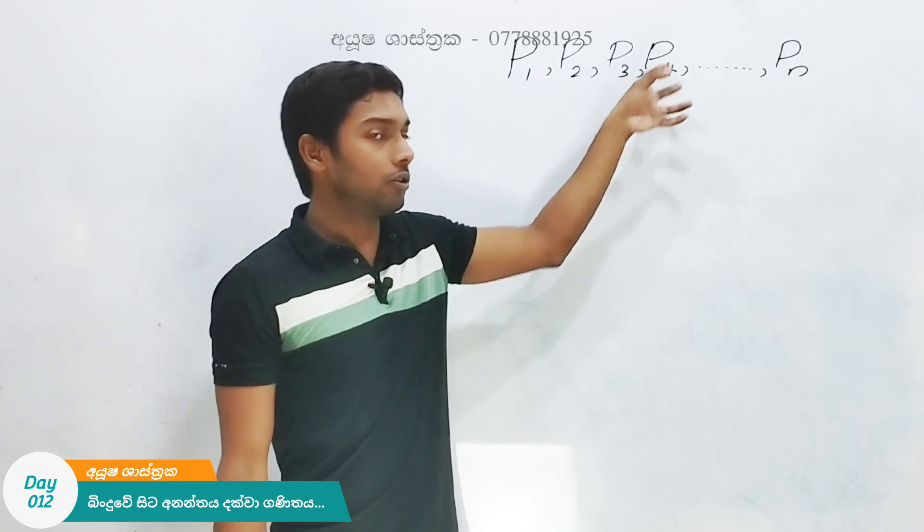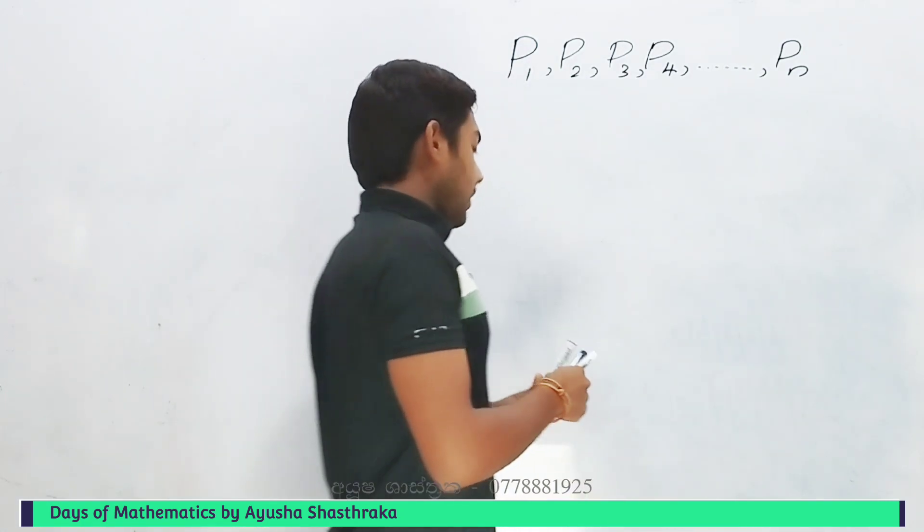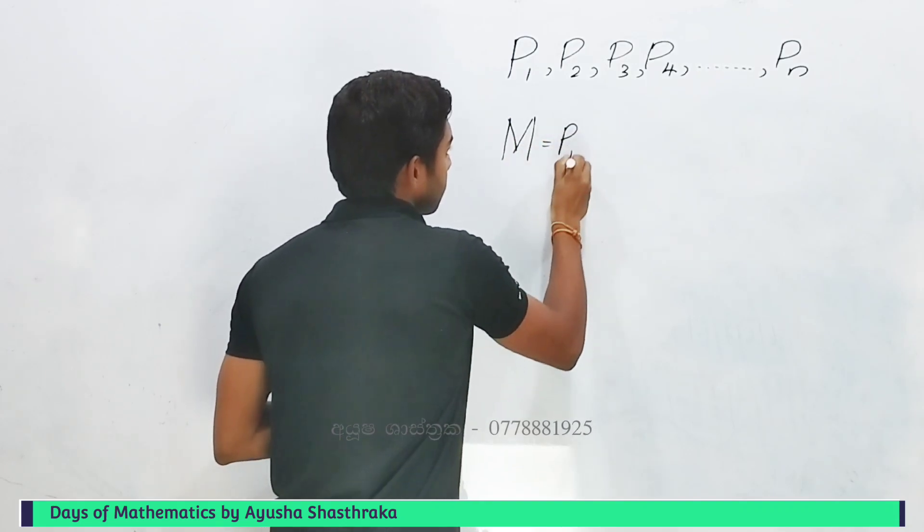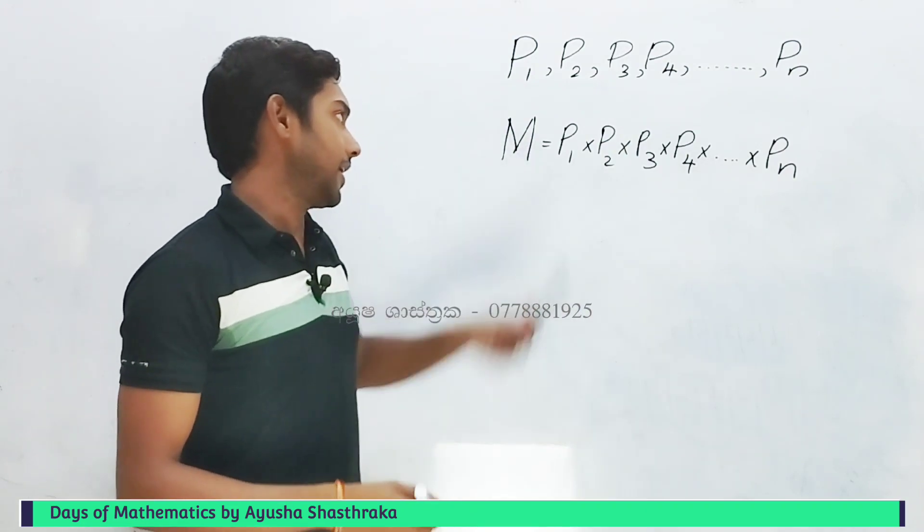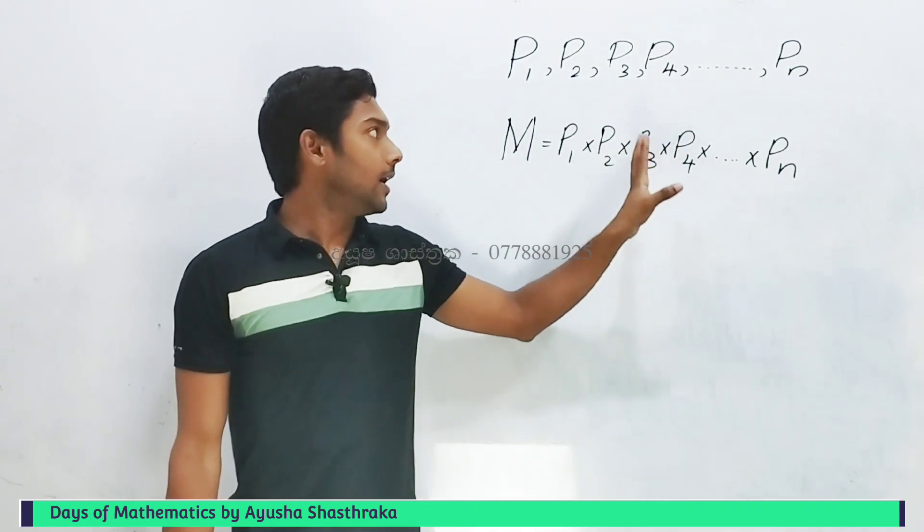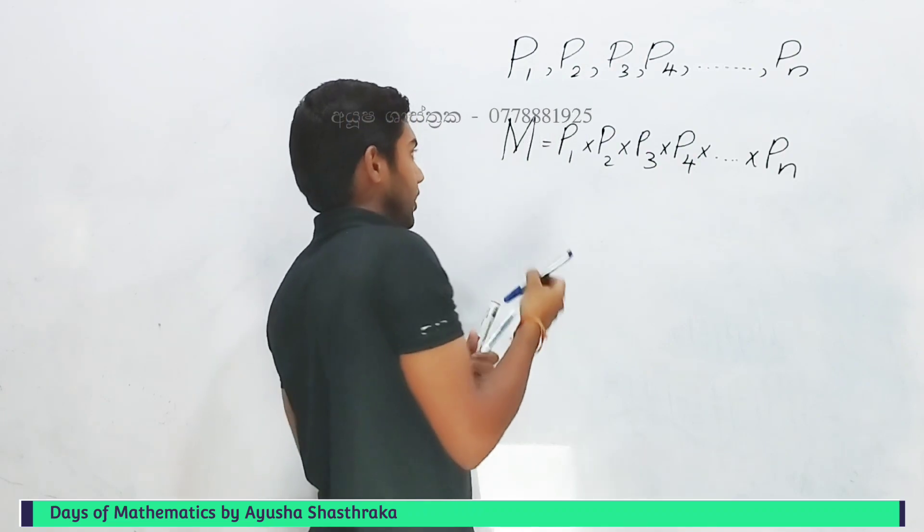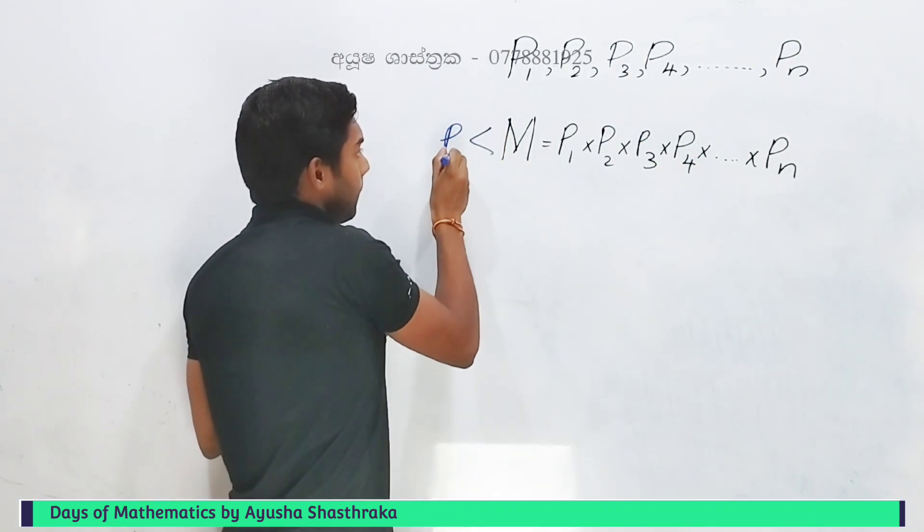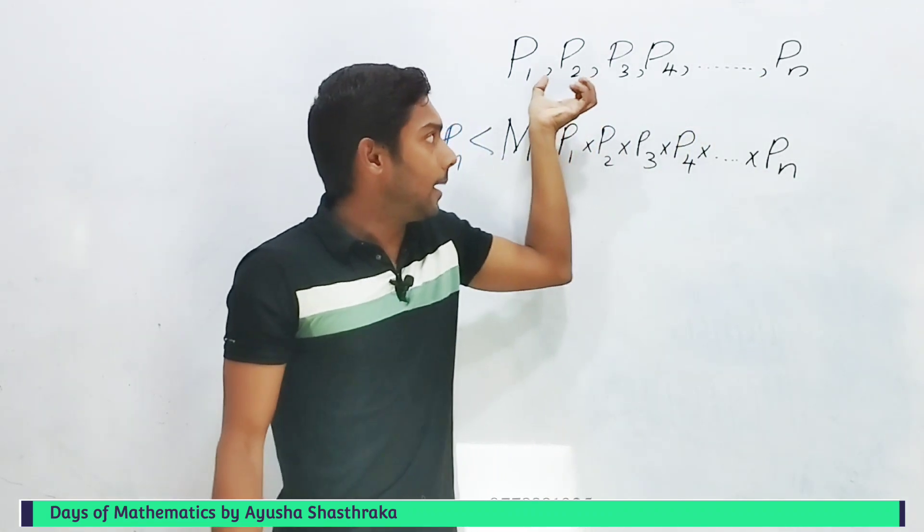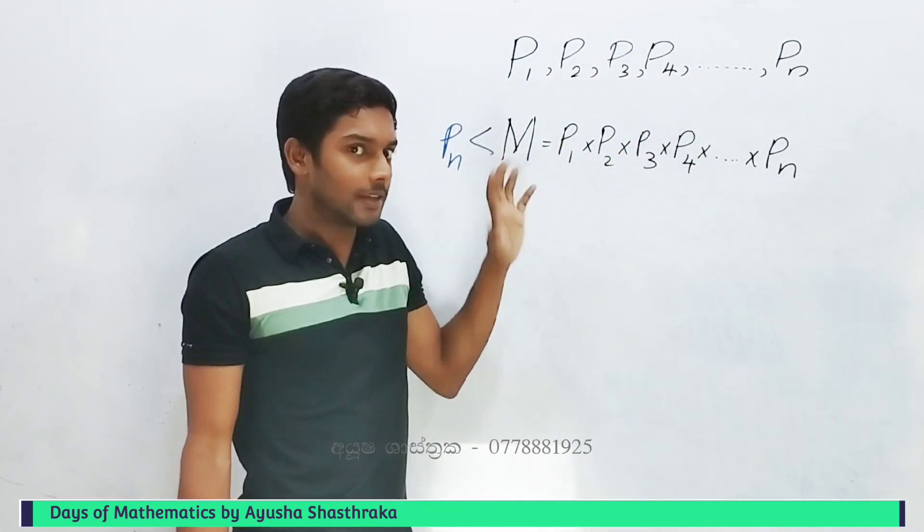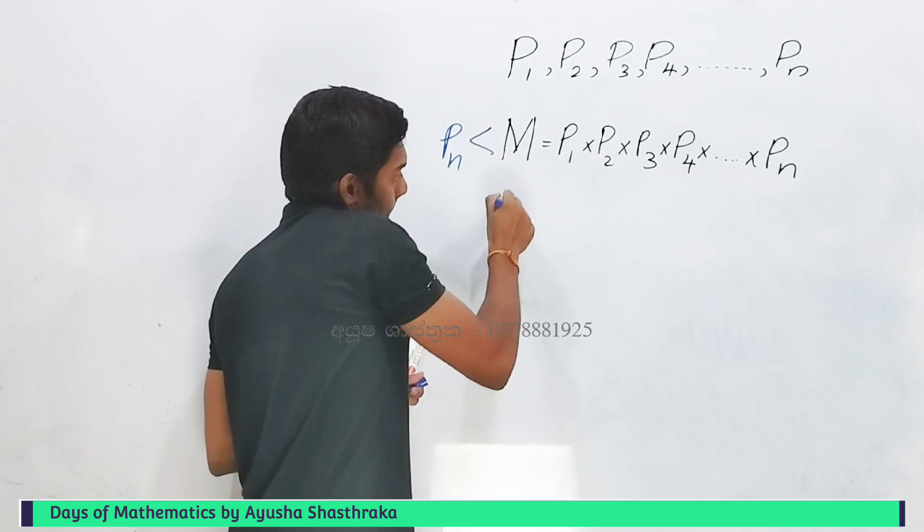Let me write this down clearly. We need to consider the product of primes and what happens when we multiply them together. This is the key to understanding the proof we're developing.